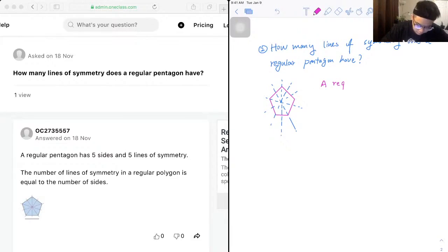So we can write our conclusion: a regular pentagon has five sides and five lines of symmetry.